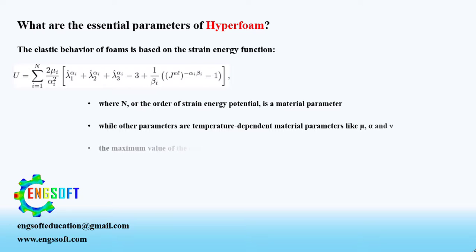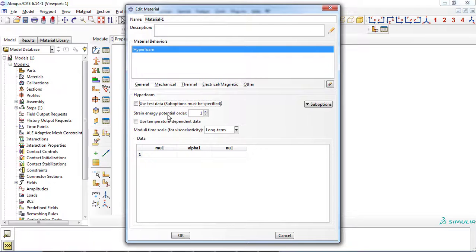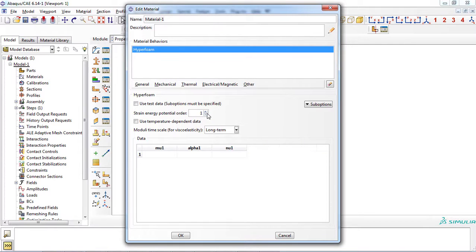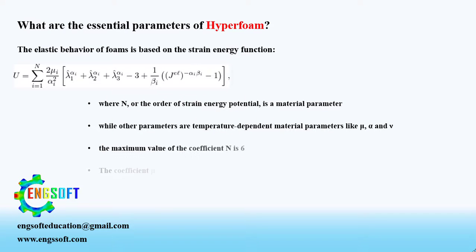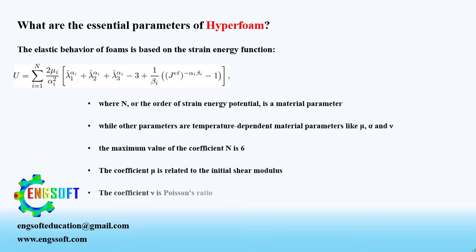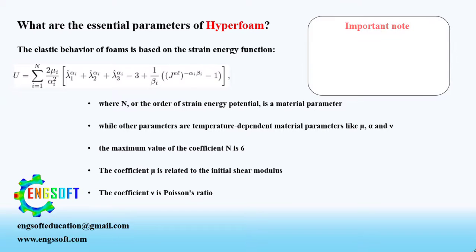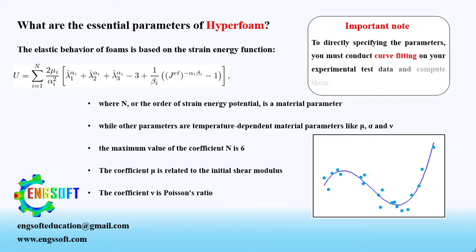The maximum value of the coefficient n is 6. Here you can increase the order of strain energy potential from 1 to 6. The coefficient mu is related to the initial shear modulus. The coefficient nu is Poisson's ratio. To directly specify the parameters, you must conduct curve fitting on your experimental test data and compute them.